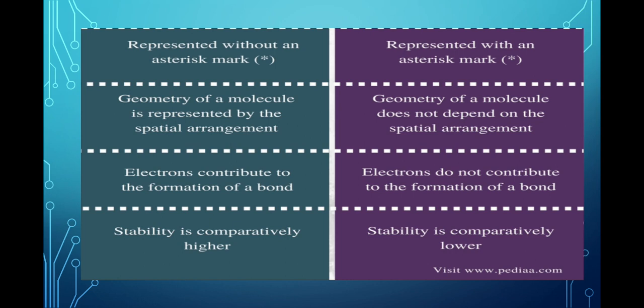The geometry of a bonding molecular orbital is represented by a spatial arrangement. The geometry of a molecule does not depend on spatial arrangement in anti-bonding molecular orbitals. Here, spatial arrangement means a type of arrangement represented in the form of lines, dots, etc.